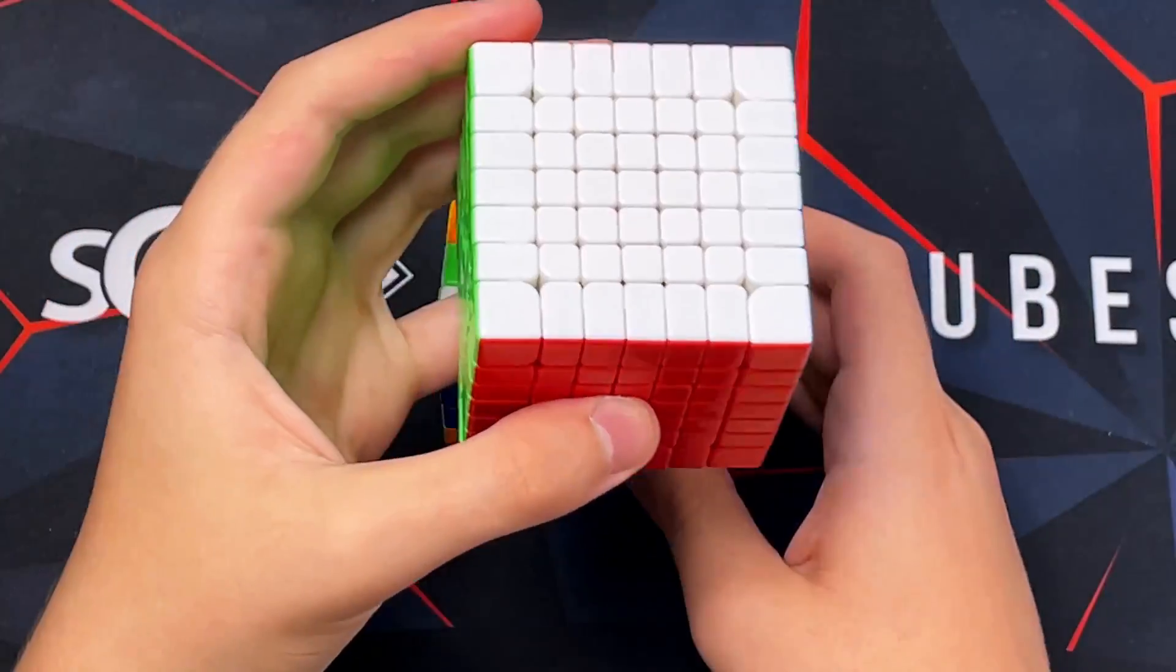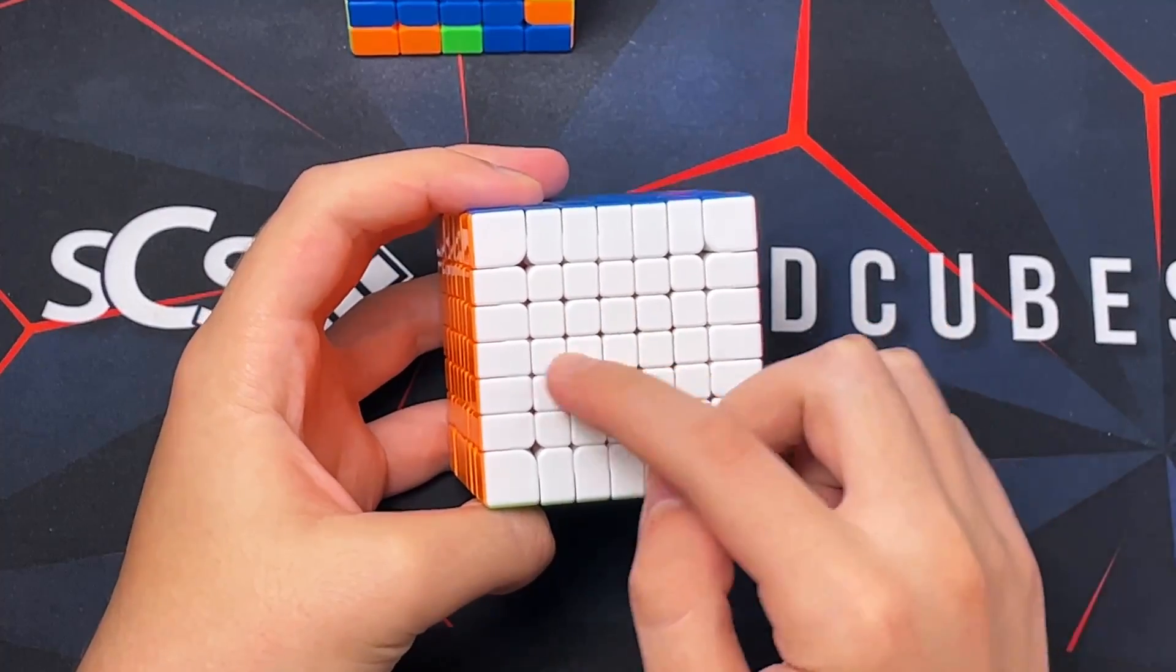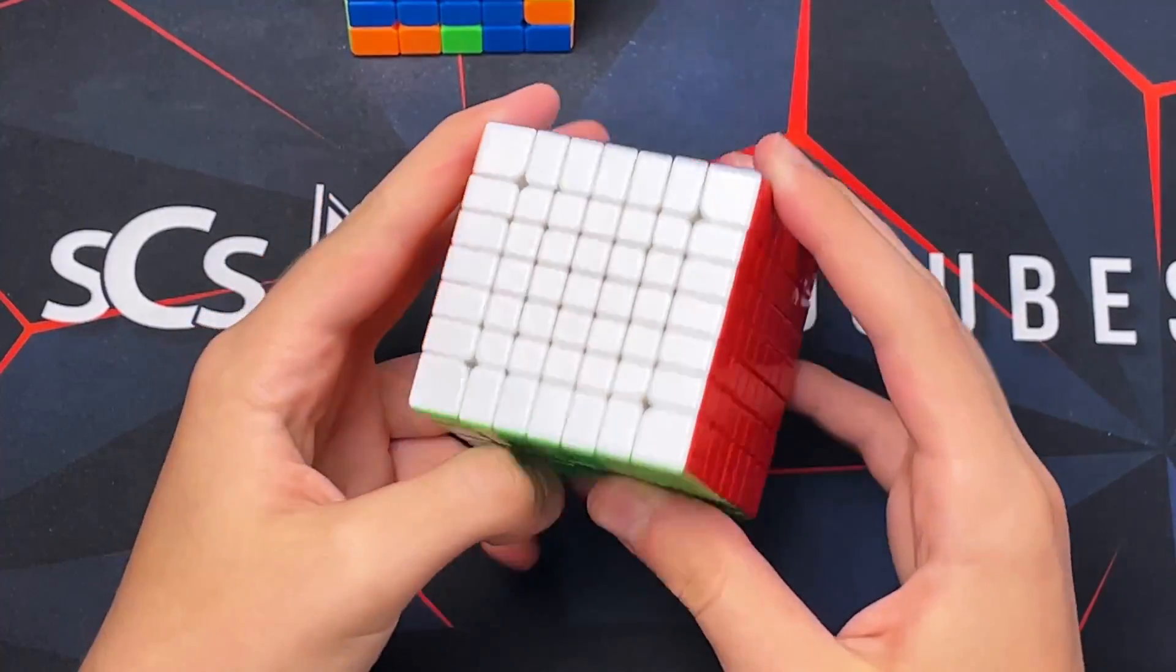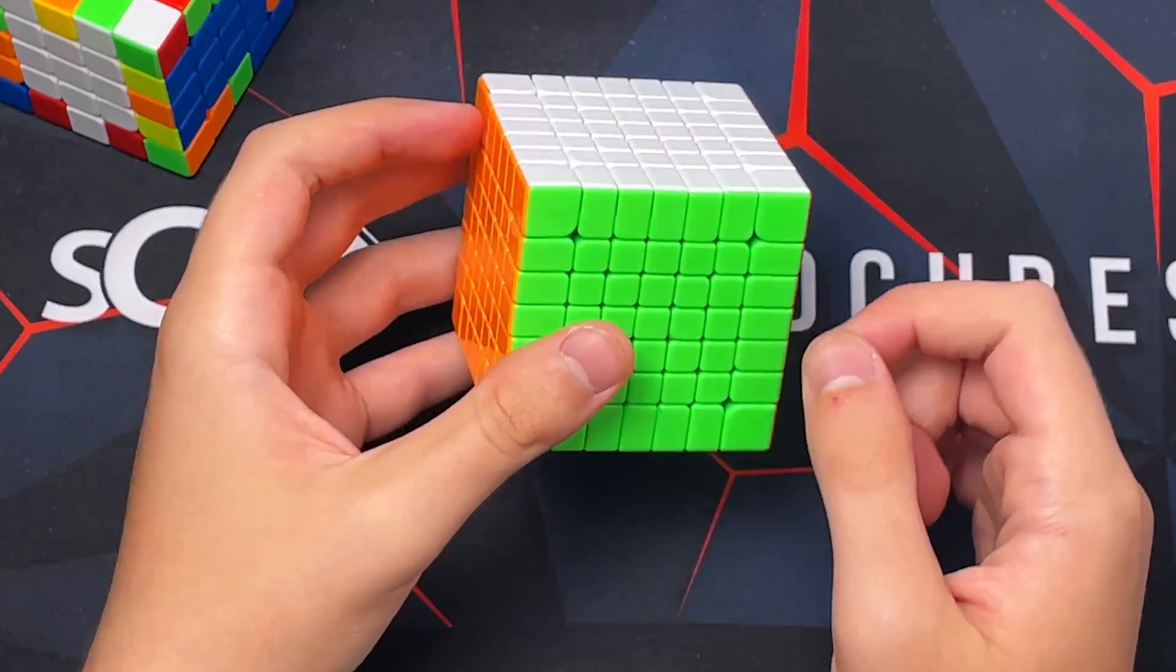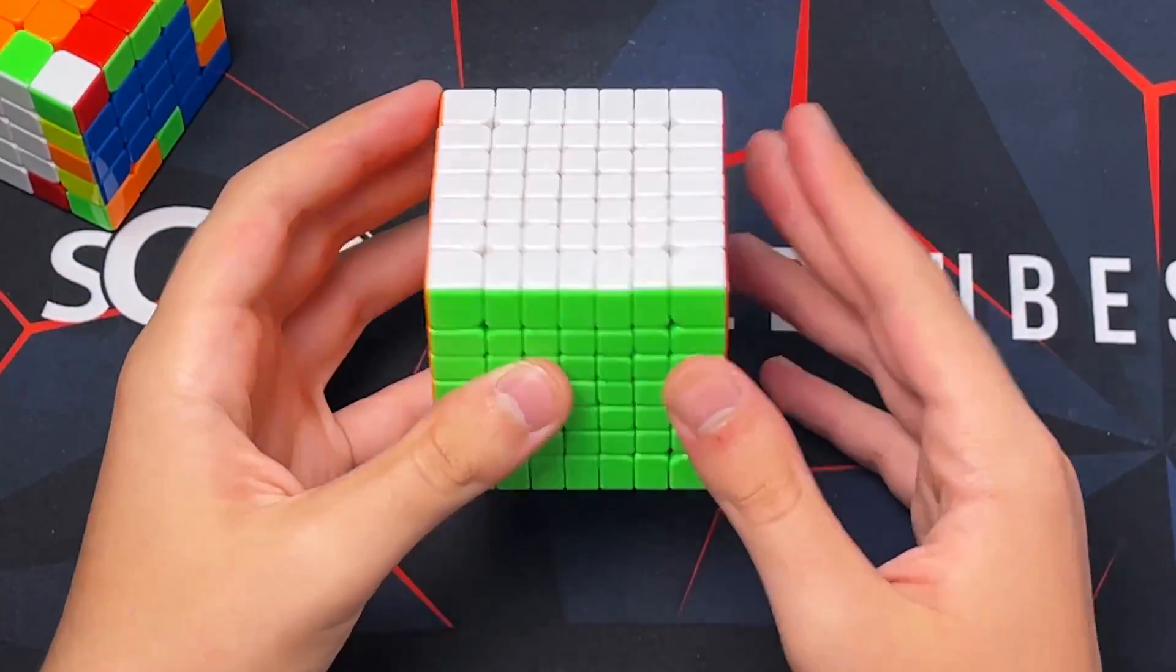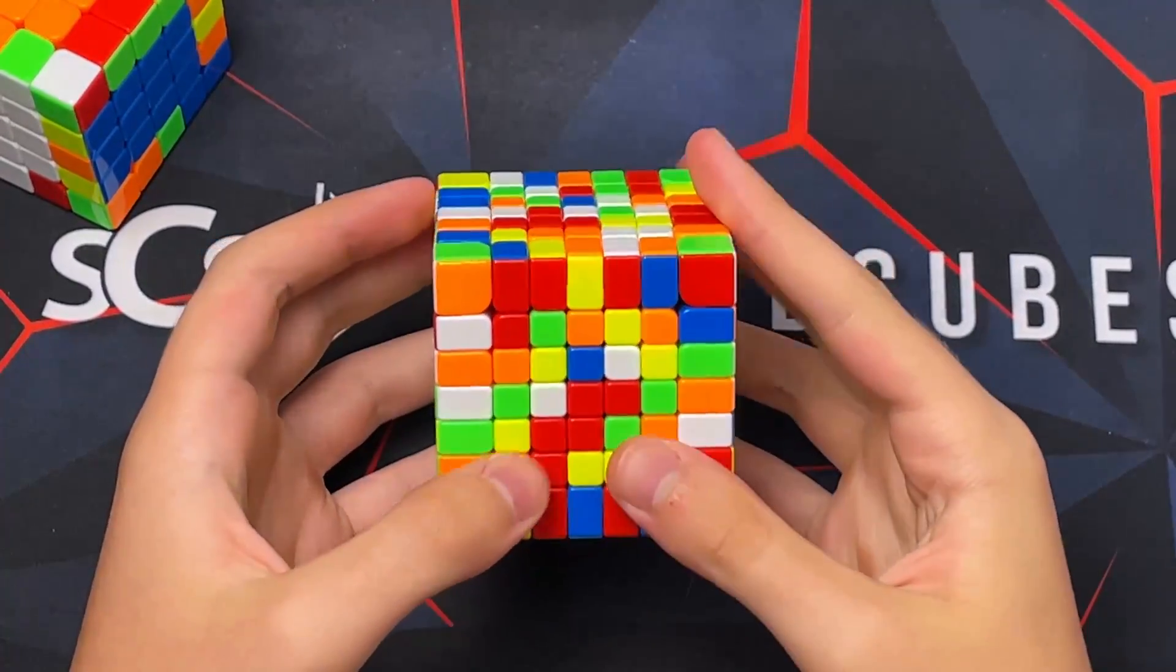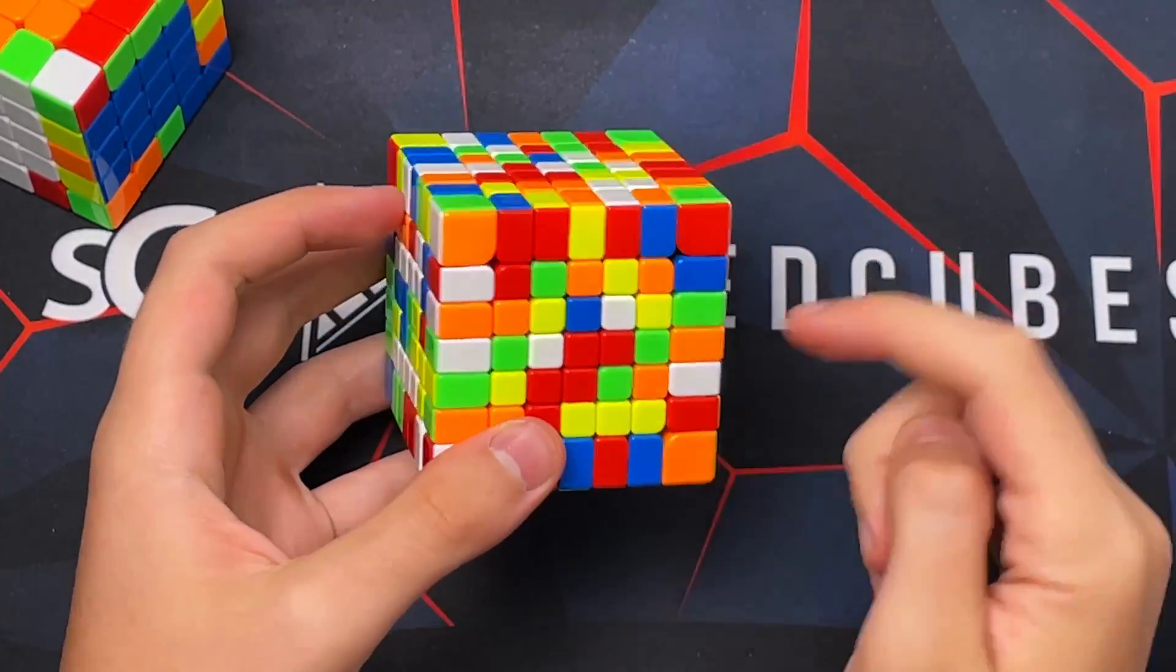I recommend learning this because a lot of these cases will show up on 7x7. They will show up on the middle 9 pieces, and that's why you need to know how to do 5x5 centers. Similar to 5x5, the way that you solve it on a 7x7 is actually exactly the same. As an example, I'm going to give it not last 2 centers.